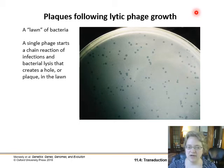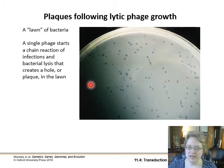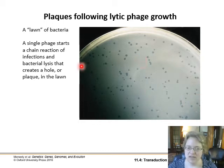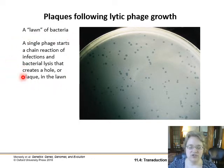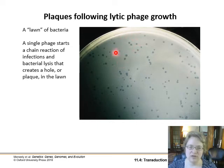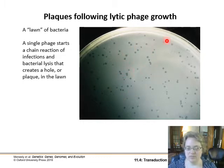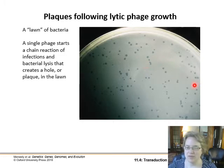People often talk about phage plaques. You start with a lawn of bacteria — that creamy film is a film of bacteria growing on the surface of an agar medium. When you treat those bacteria with phages, just one phage starts a chain reaction of infections. After a while, you see holes where bacteria are being killed and the phages are spreading outward killing the next round of bacteria. These little holes are called plaques — areas of dead bacteria filled with viral particles spreading throughout the bacterial population.